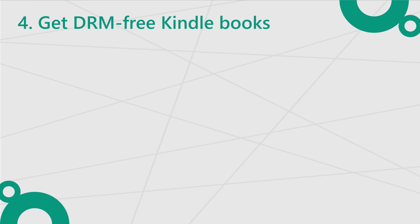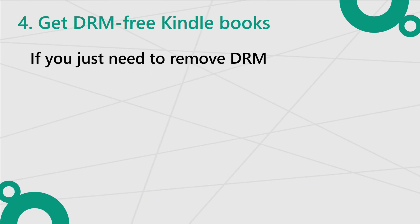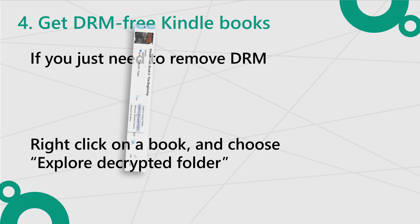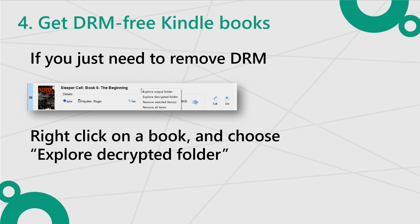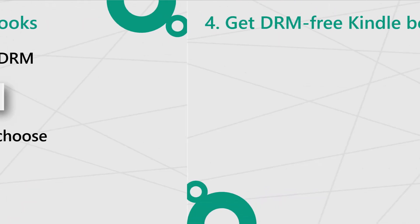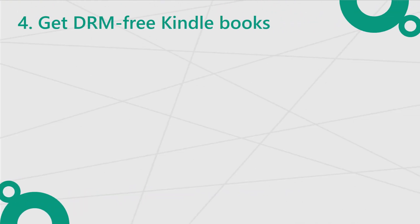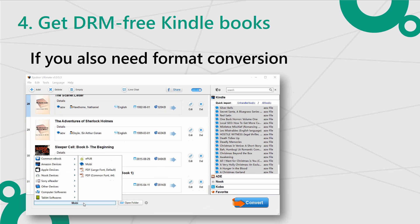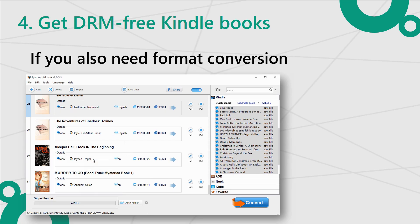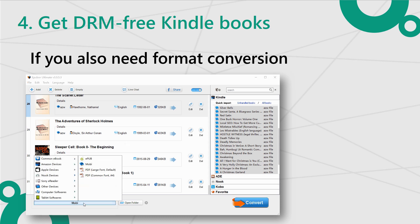Step 4: If you only need the Kindle books to become DRM-free, just right-click on the blank space of any decrypted book and choose Explore Decrypted Folder. If you need to convert the Kindle books to other formats like Epub or PDF, please choose the output format you want, then click Convert. After the conversion finishes, the folder containing the output files will be opened automatically.